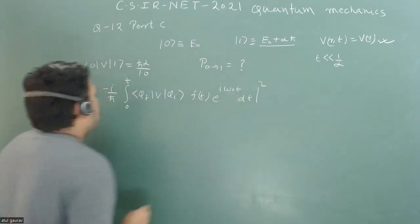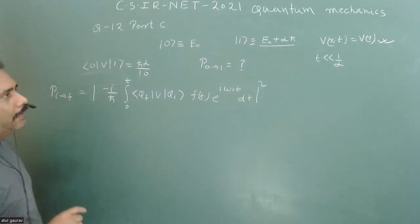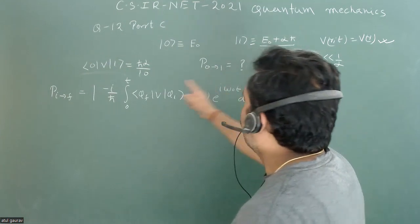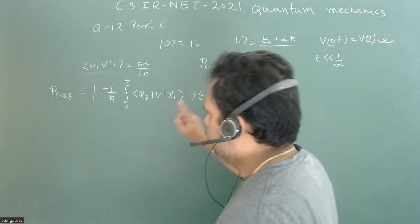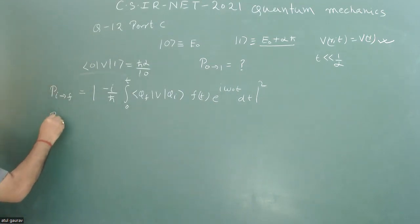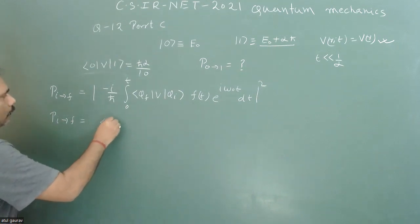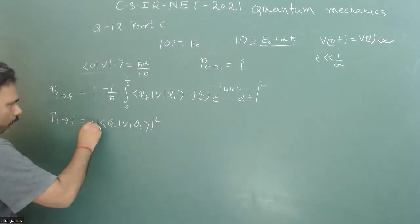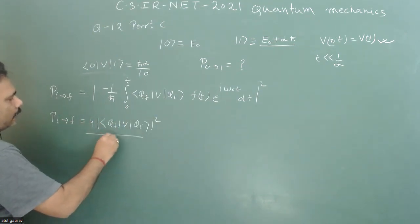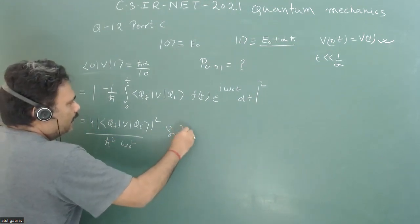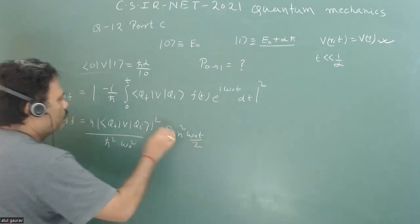We have to take the mod square. But in this particular problem, f(t) is one—this is not a time-dependent potential. So the formula can be reduced to a very compact form: P_if = |⟨ψ_f|V|ψ_i⟩|² (4/ℏ²ω₀²) sin²(ω₀t/2).